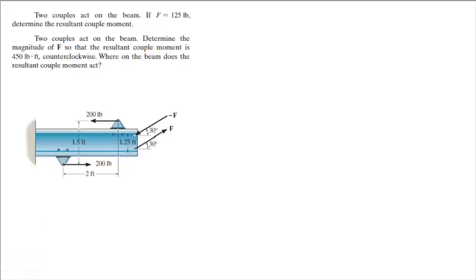Alright guys, I'm going to do these two very easy problems together. You have two couples acting on the beam. If f is equal to 125, find the resultant couple moment. Then they give you the couple moment and they want you to find f.